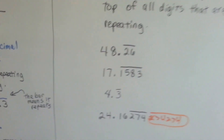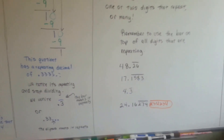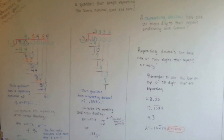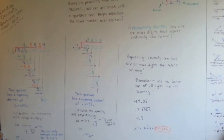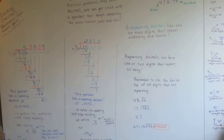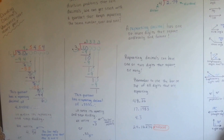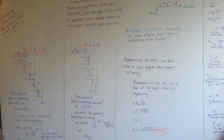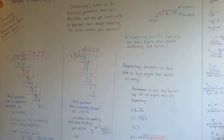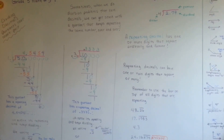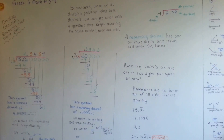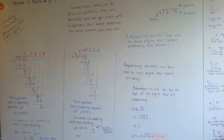So that's a repeating decimal. It's normally not taught until 6th grade, but I figured, what the heck — you're smart enough to handle this, right? And besides, what if you do a problem and this happens and it's not next year? You need to know. The ones that do stop are called terminating decimals — we'll talk about that next year. We're going to talk about fractions coming up. I hope to see you there. Bye!